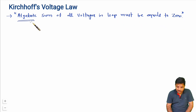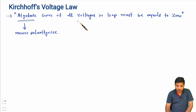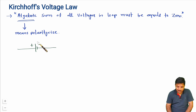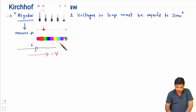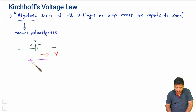The meaning of algebraic here is polarity-wise summation. Now, what is the meaning of polarity-wise summation of voltages in a loop? Consider one battery having a positive terminal on one side and a negative terminal on the other, with voltage V. If you move from plus to minus through this battery, that potential should be considered as minus V, as it opposes the energy of the battery. But when you move from minus to plus, it is in the direction of energy, so that should be considered as plus V.